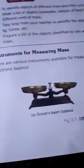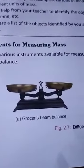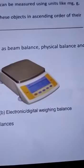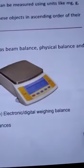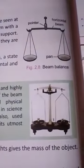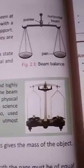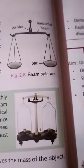There are different types of weighing machines. You can see grocer's beam balance and electronic or digital weighing machines. These are the instruments which we use to measure mass. Come to next page, page 24. You can see beam balance. It is the simplest instrument. You have seen it in the grocer's shop.